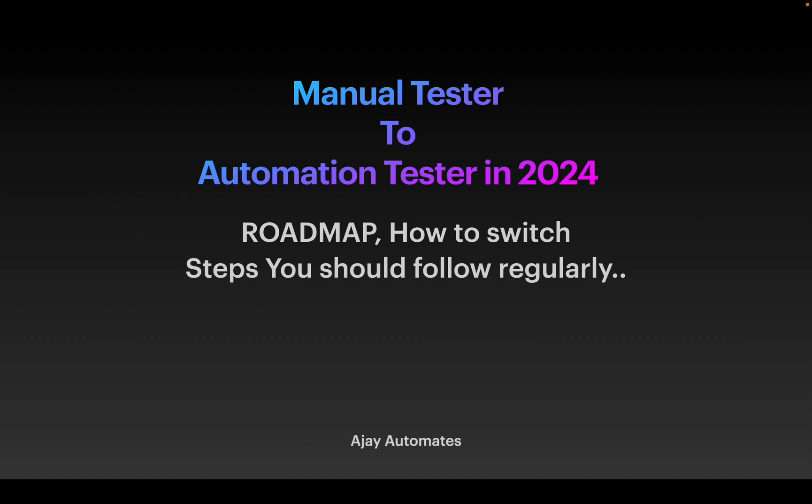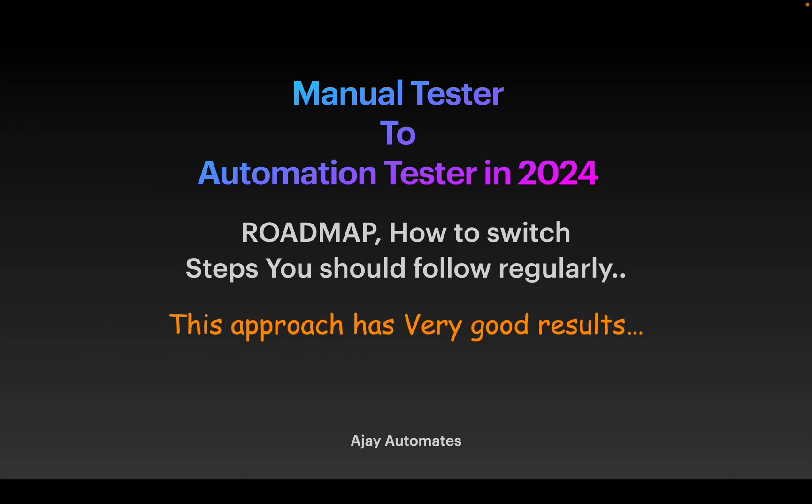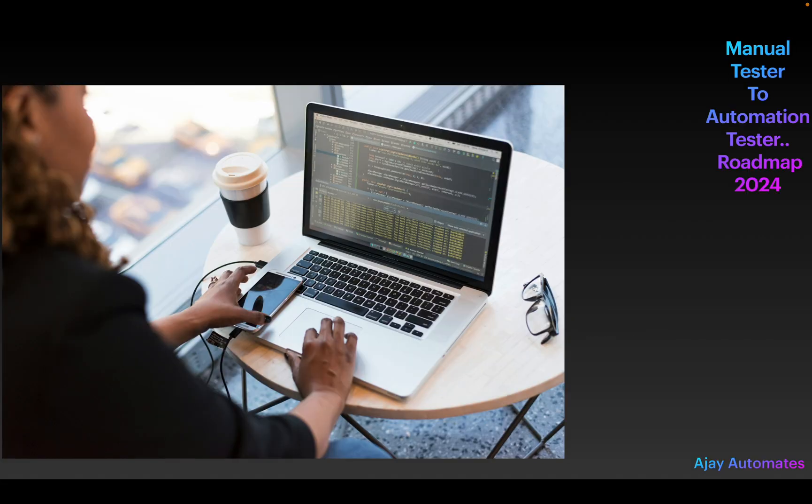Hi friends, welcome to Ajay Automation channel. In this video we are going to quickly see about six important steps for a manual tester to follow to become an automation tester. Consider you are doing manual testing and your project is demanding to start automation, or you want to switch jobs for a higher salary or improve your technical skill set. You can definitely follow these approaches — this approach has very good results.